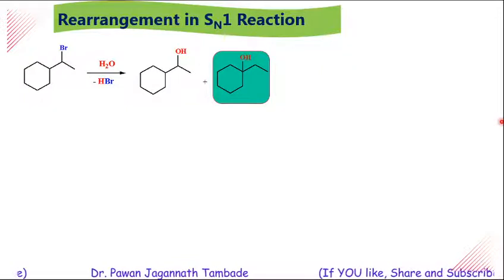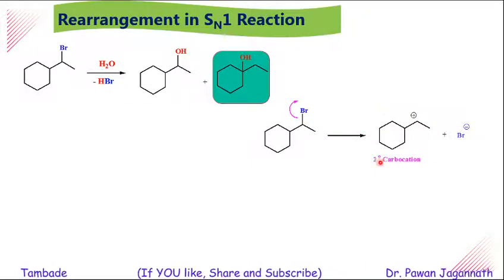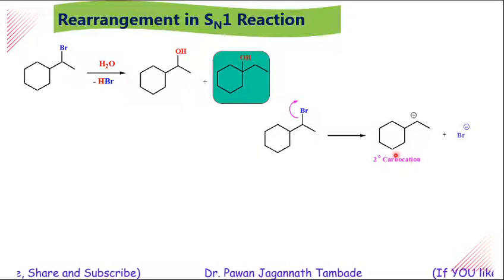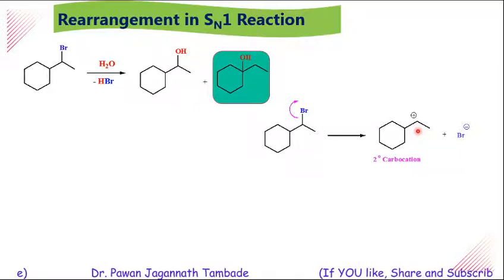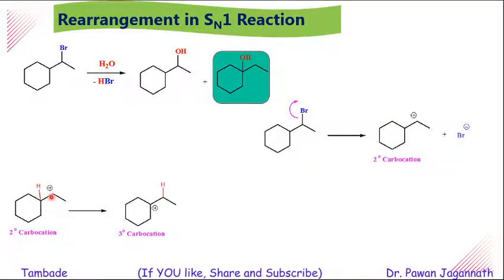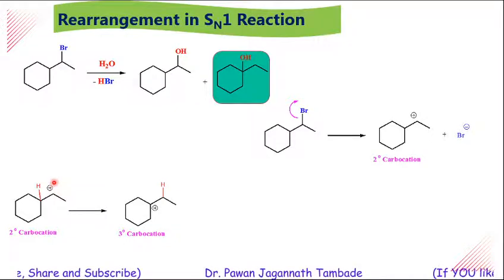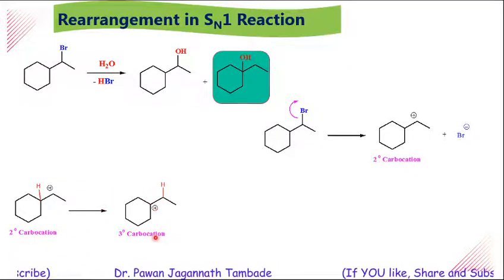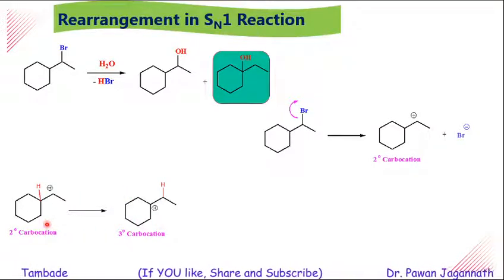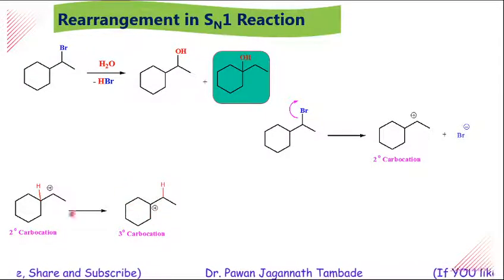Let us go through the mechanism of this reaction. In the very first step, there is breaking of the C–Br bond and formation of a carbocation intermediate, as we have seen in all SN1 type reactions. After formation of this carbocation intermediate, this is a secondary carbocation. In this case, there is a possibility that from the neighboring carbon atom, one hydrogen can migrate to this carbocation carbon and this carbon gets a positive charge. This hydrogen shift will occur in such cases and we will get a tertiary carbocation. Tertiary carbocation is more stabilized compared to secondary, and as a result the amount of tertiary carbocation during the course of reaction is more compared to secondary carbocation.